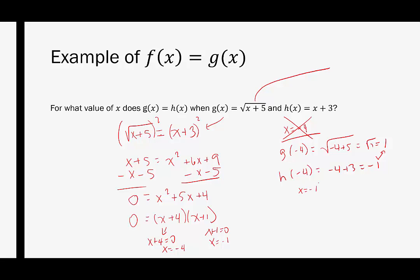Checking negative 1. g of negative 1 is equal to the square root of negative 1 plus 5, which is equal to the square root of 4, which is equal to 2. h of negative 1 is negative 1 plus 3, which equals 2. There, g of negative 1 and h of negative 1 really do equal each other. So we keep that solution. There is only one solution, and it's x equals negative 1. You want to make that very clear that you understand that you know there's only one solution here. Because that negative 4 tried to sneak in there, but it didn't actually work.